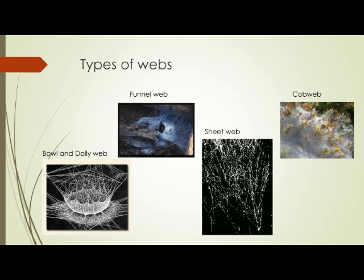The bowl design is to catch any insects which fall down from the vegetation. The sheet web does the same thing — it intercepts prey that falls from surrounding vegetation as well as intercepting flying prey. The cob web is basically a sticky mass of silk and does the same thing as the sheet web. The funnel web is often built by tarantulas; some build it as a retreat where they can rest and consume caught prey, while others use it to camouflage their bodies.